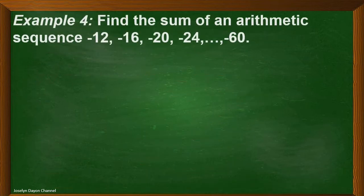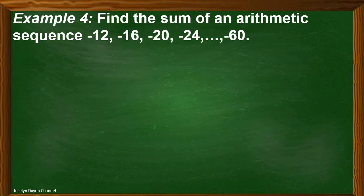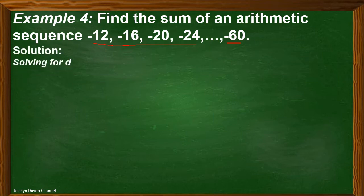Now let's have the fourth example. Find the sum of the arithmetic sequence: negative 12, negative 16, negative 20, negative 24, where the last term is negative 60. For our solution, we first solve for the common difference.